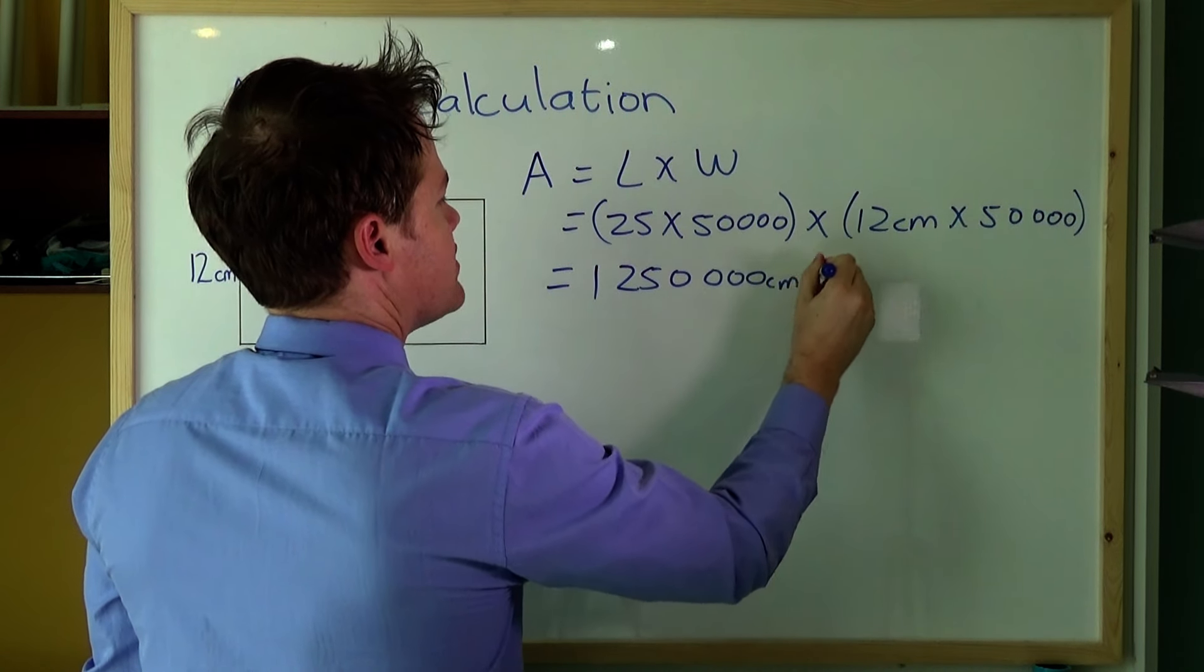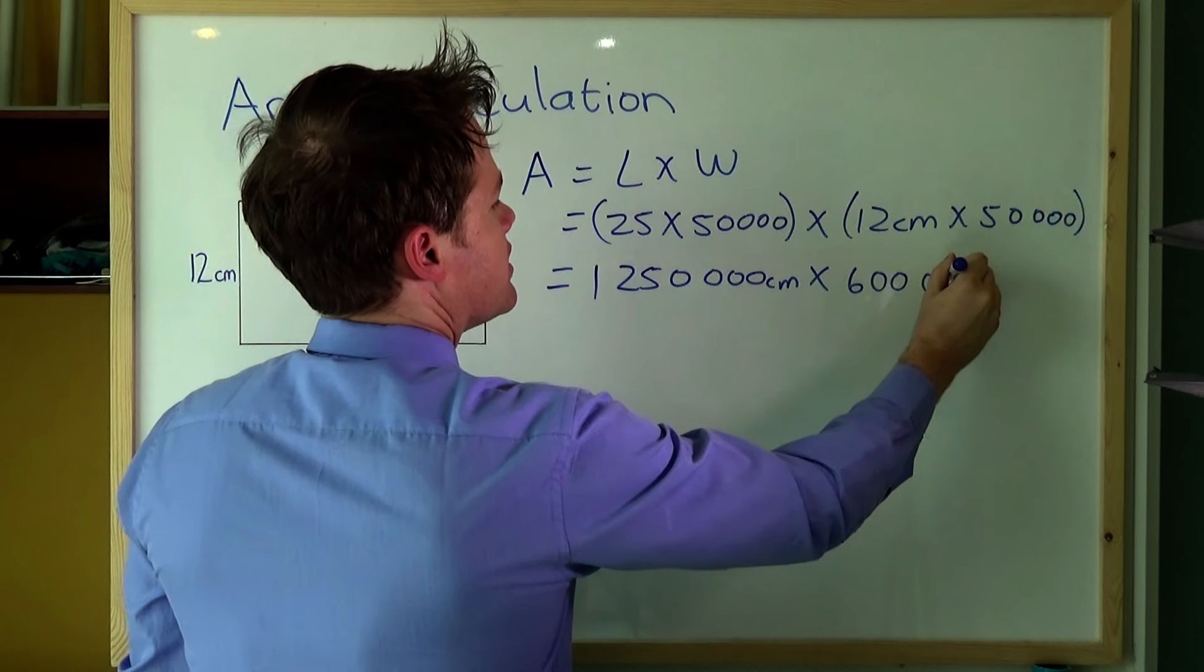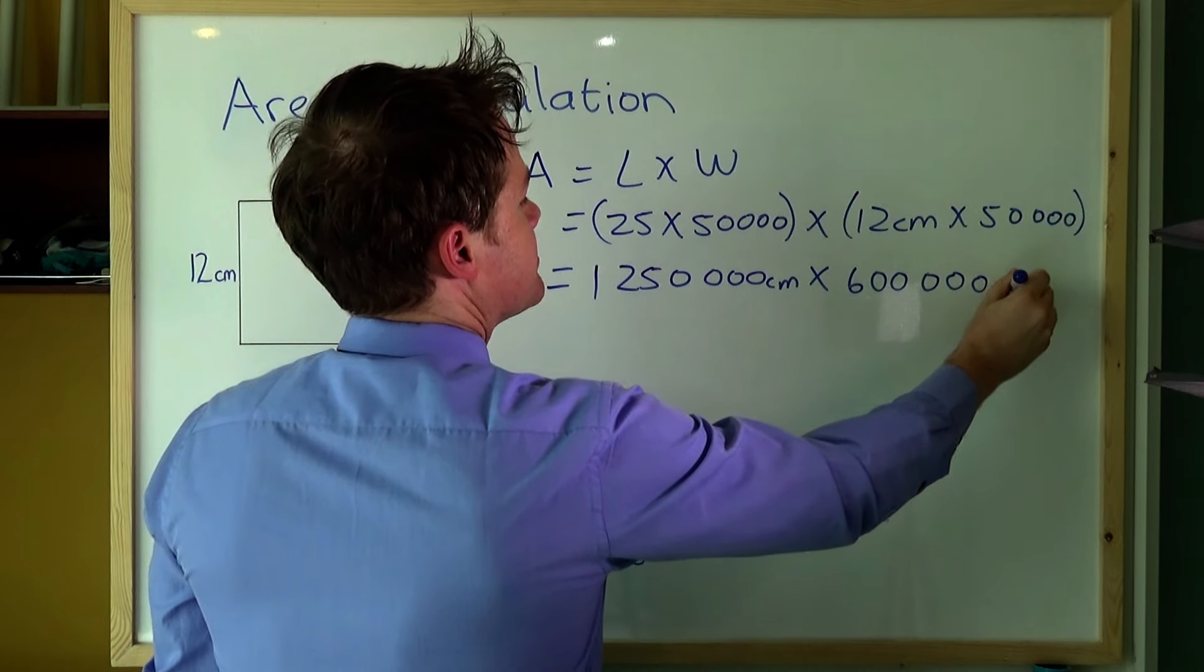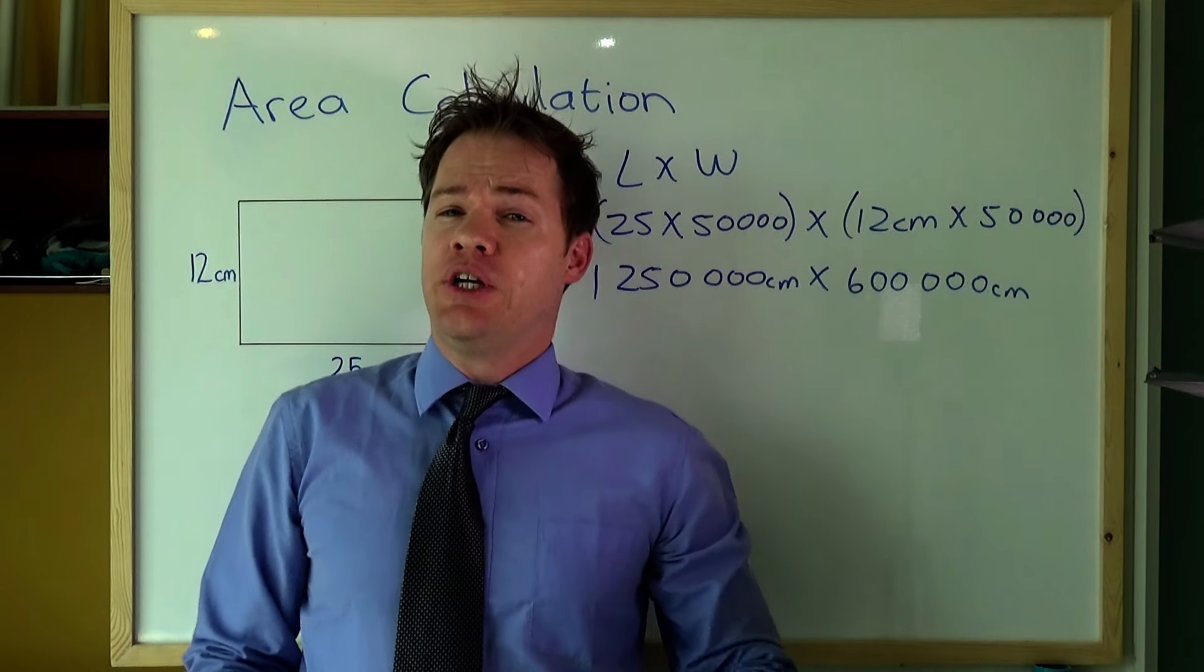This will give you 1,250,000 centimeters times 600,000 centimeters.